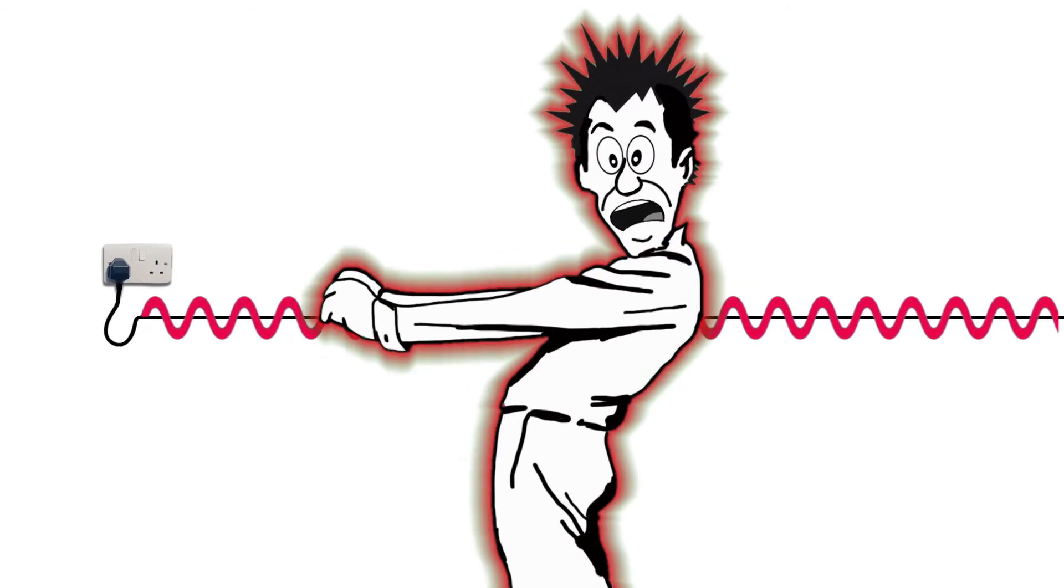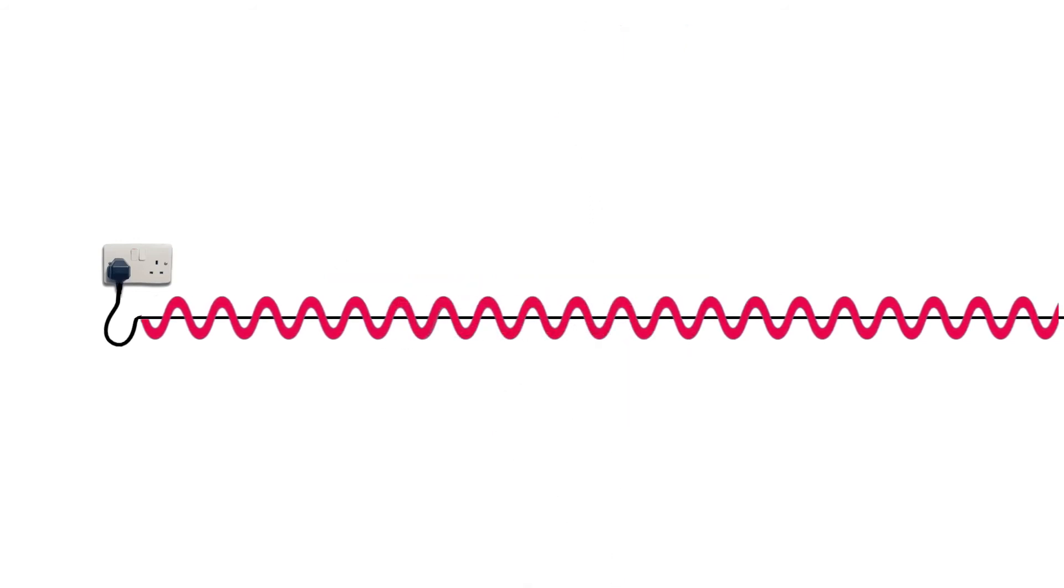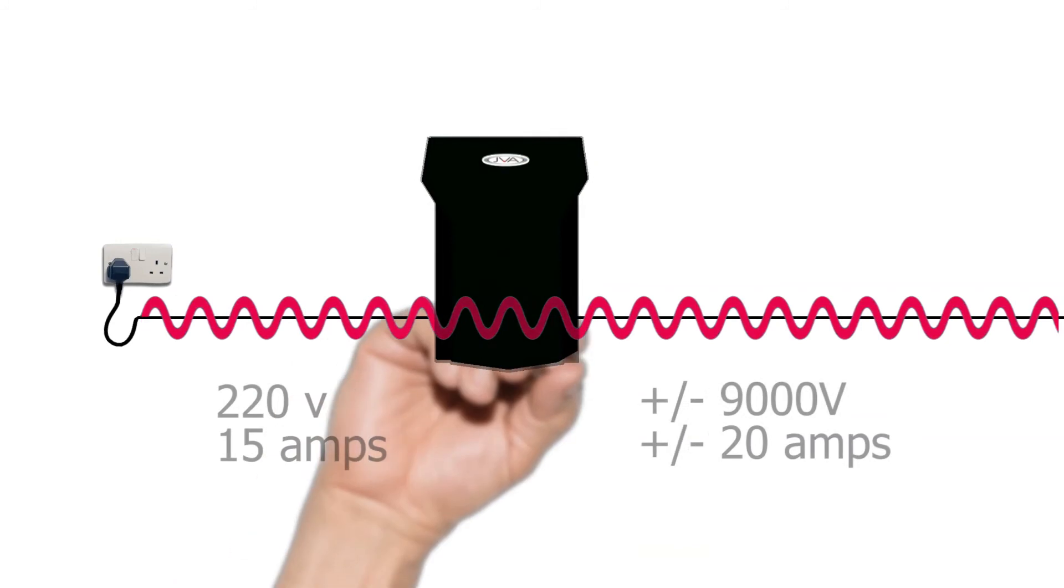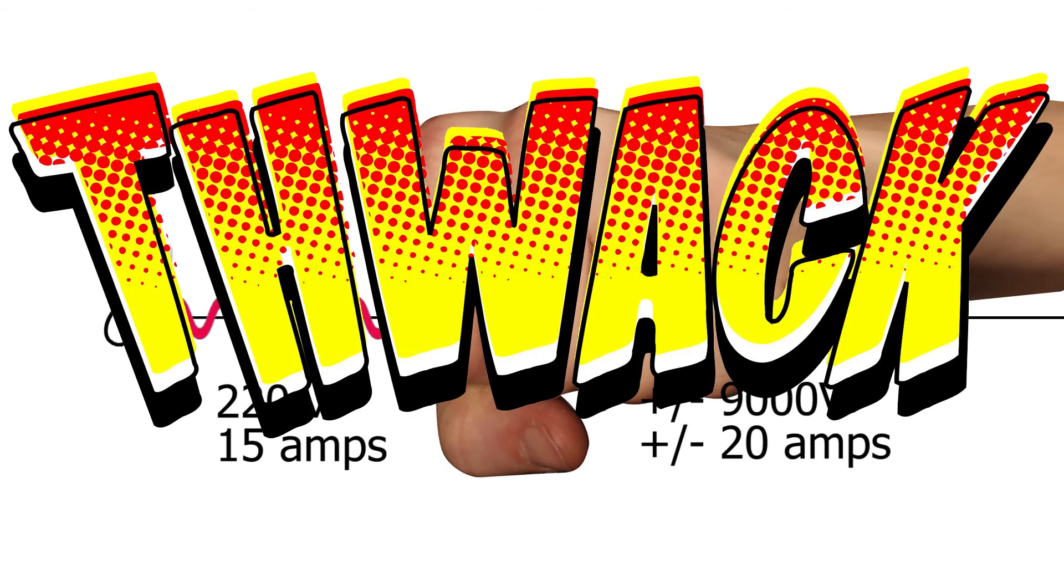The electric fence energizer converts the constant flow of energy into a short powerful electric pulse that travels down the fence line. In terms of instantaneous power, this pulse is actually stronger than the incoming power. However, the pulse is now a non-lethal electric punch designed to deter an animal or person from touching the fence.